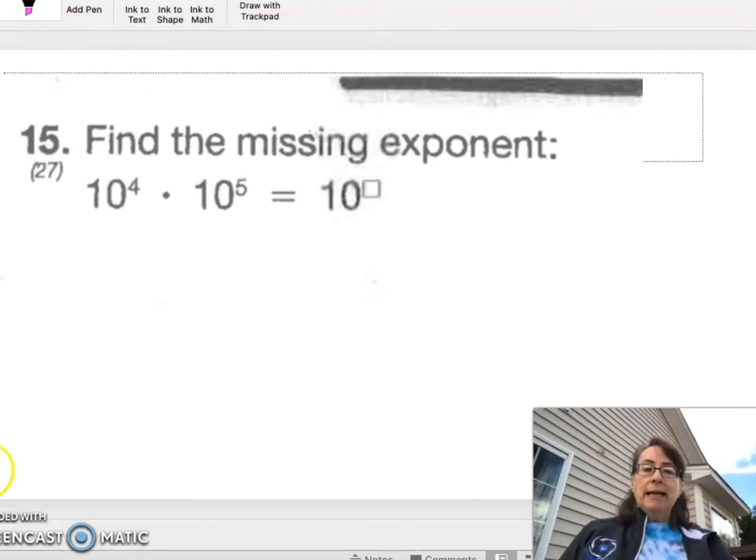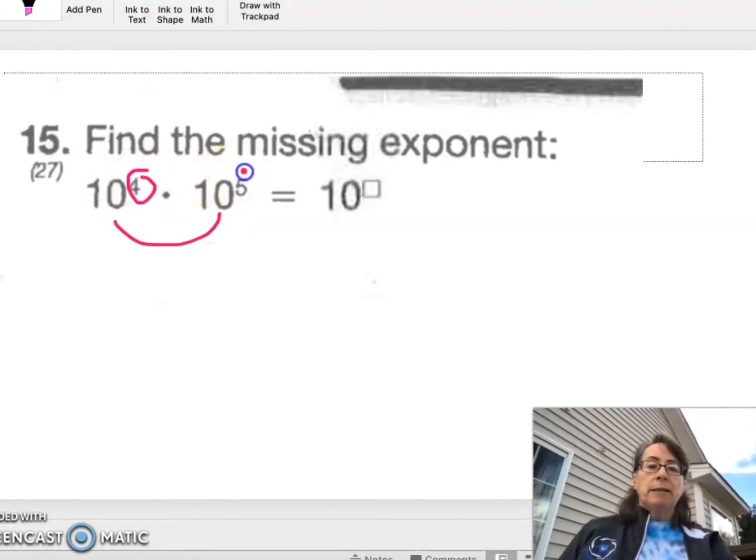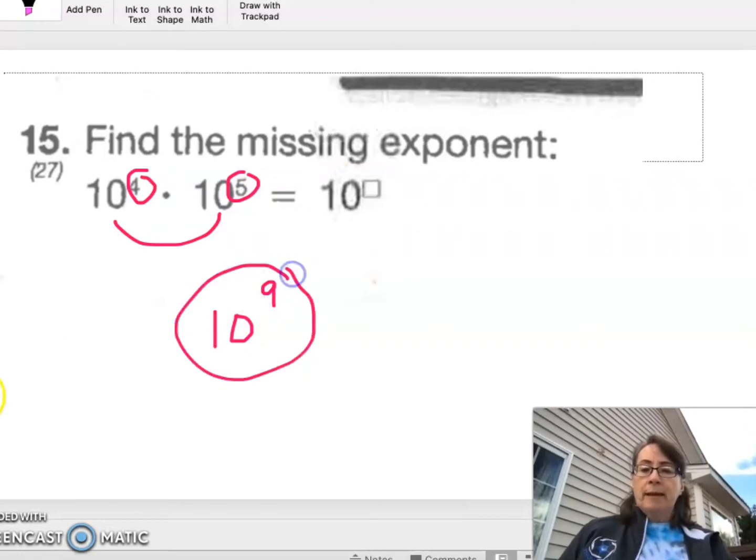Finding the missing exponent. This is number 15. Now remember, when we multiply like bases, we add the exponents together. So 10 to the ninth power would be the answer.